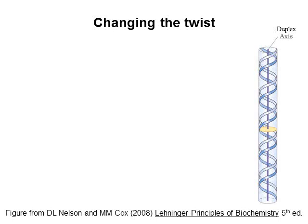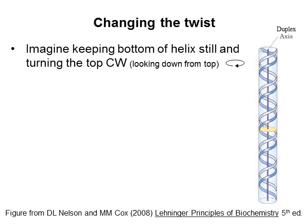Now let's think about how we might change the twist of this short piece of DNA. Suppose the bottom of the double helix were fixed in place and unable to rotate. Then you can imagine rotating the top of the DNA in a clockwise direction, assuming you're looking down the axis from the top. Can you picture what would happen to the twist? Take a minute and think about it — you might want to pause the video.